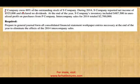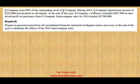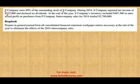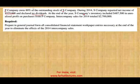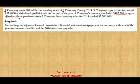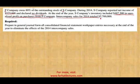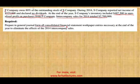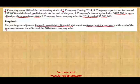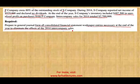P Company — the parent company — owns 80% of the outstanding stock of S Company, which is the subsidiary. During 2014, S Company reported net income of 525 and declared no dividend. At the end of the year, S Company inventory included 487 in unrealized profit on purchases from P Company. Intercompany sales for 2014 total 2.7 million. Prepare the journal entry and all consolidated financial statement work paper entries necessary at the end of the year to eliminate the effect of the 2014 intercompany sales.